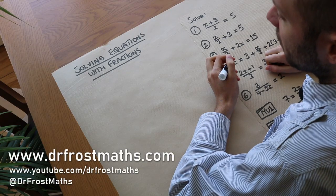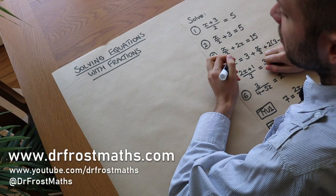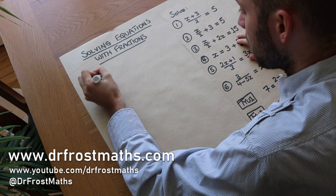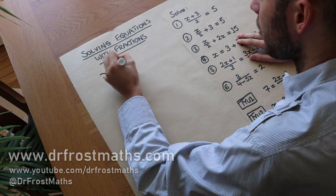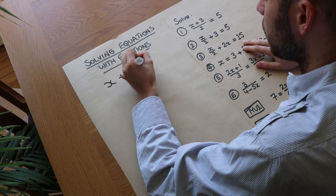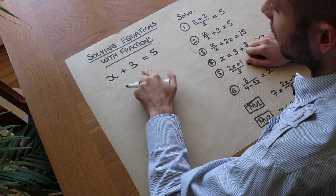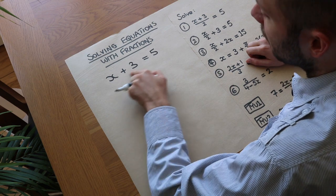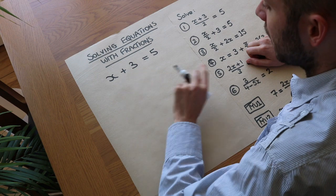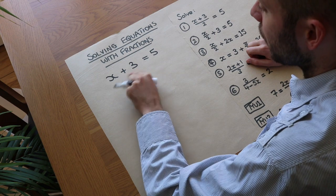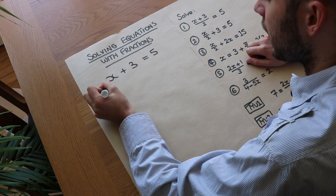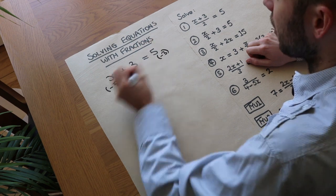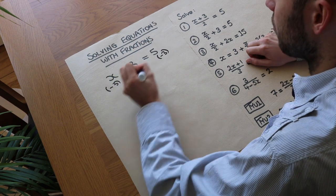Hello and welcome to this video on solving equations involving fractions. Let's say we have a simple equation like x plus 3 is equal to 5. We know solving this means getting x on its own, and we do that by doing the opposite operation — the opposite of adding 3 is subtracting 3, giving us x is equal to 2.